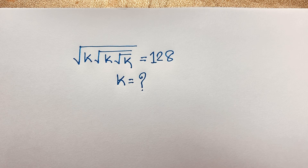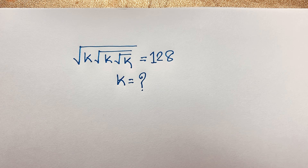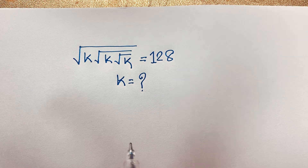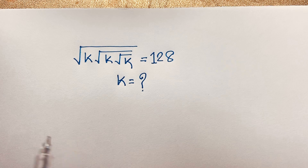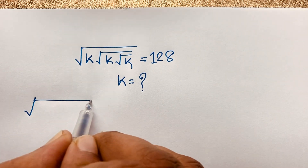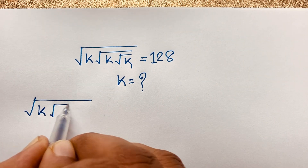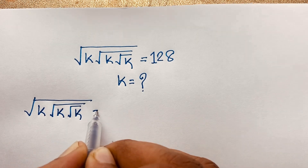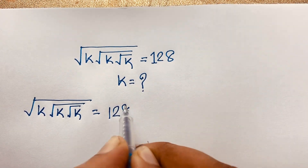Hello everyone. In this video we have solved a nice radical Math Olympiad question: square root of k times square root of k times square root of k is equal to 128. We are finding out what is the value of k in this radical Math Olympiad question.